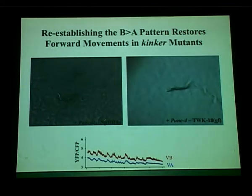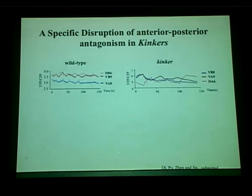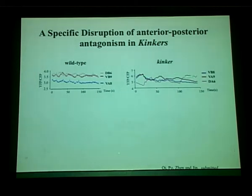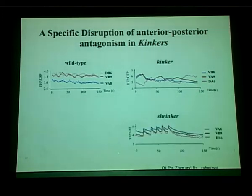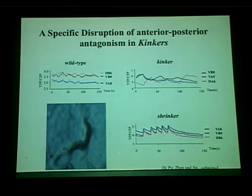We also noticed in unpublished work that this disruption of anterior-posterior motor antagonism through A and B neurons is specific for the anterior-posterior axis but does not disrupt the ventral-dorsal aspect. We have a C. elegans mutant that disrupts all coordination so that A, B, V-class, and D-class all synchronize their firing, and what you see is an animal generating a shrinker phenotype.